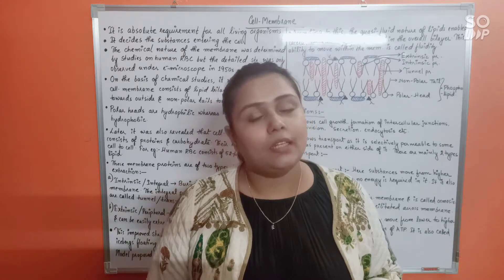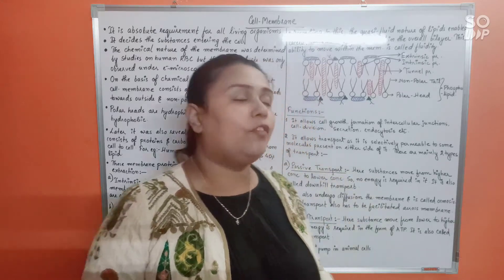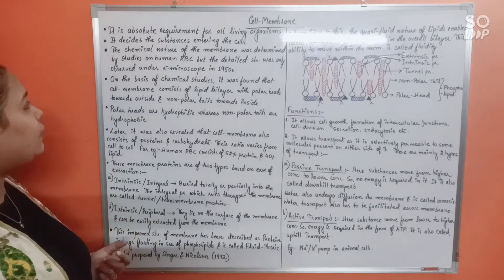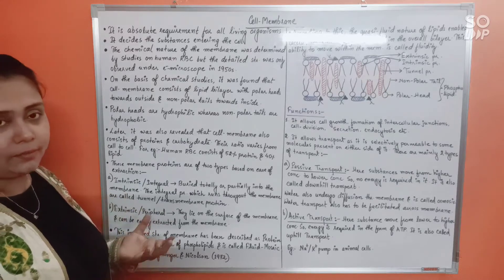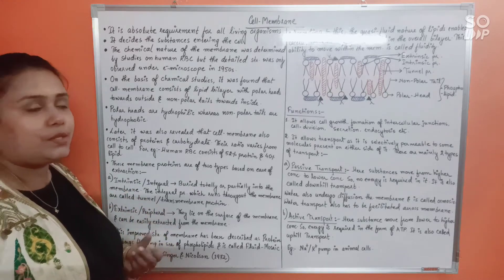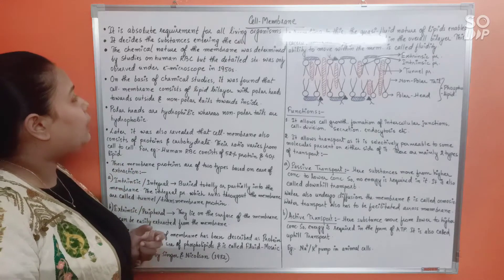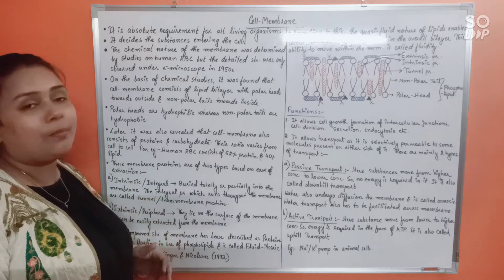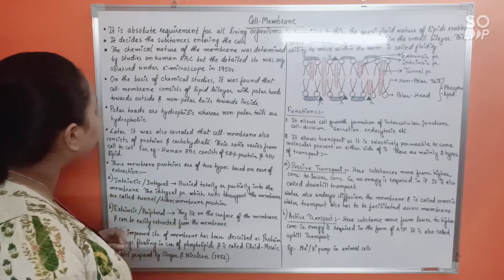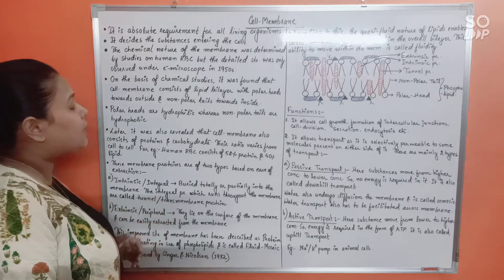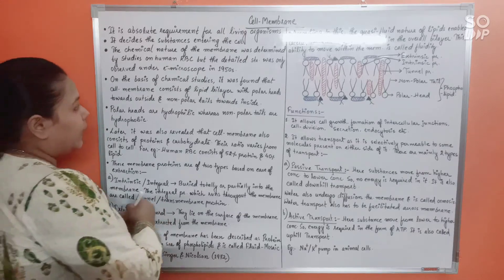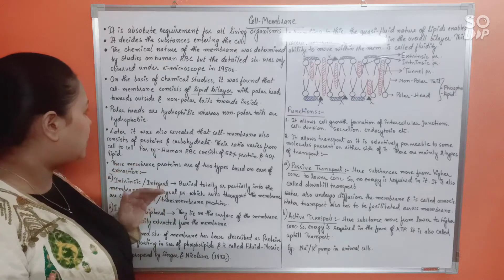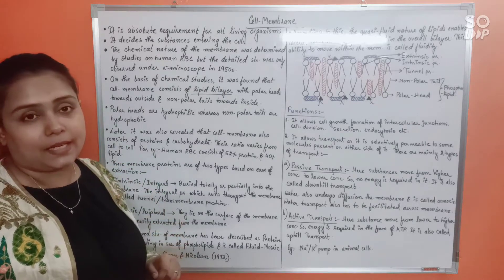The fluid mosaic model is the most well-accepted model of plasma membrane structure and composition so far. It was proposed in 1972 by Singer and Nicholson. Cell membrane is an absolute requirement for all living organisms. Its detailed structure was only observed under the electron microscope in the 1950s. It consists of a lipid bilayer with polar heads towards the outside and non-polar tails towards the inside.